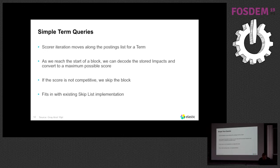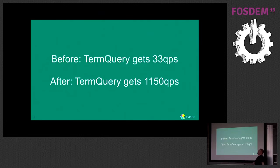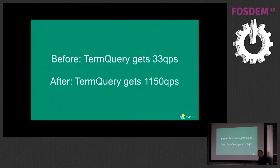We have a set of benchmarks which run every night against a Wikipedia corpus with a bunch of standard queries. The term query in particular was running at 33 queries per second, which is perfectly reasonable. It jumped up overnight to 1,150 queries per second — a fairly significant increase. So that's pretty cool.